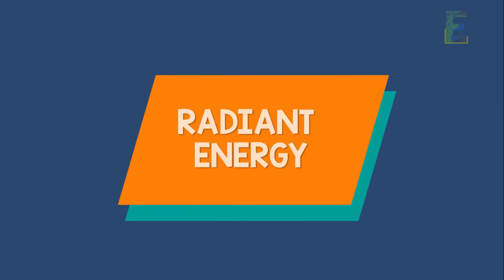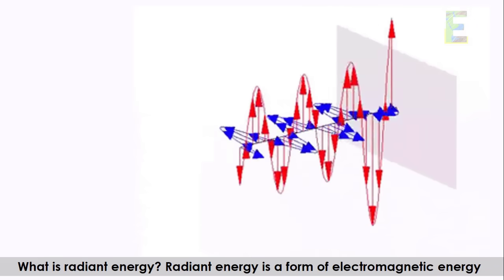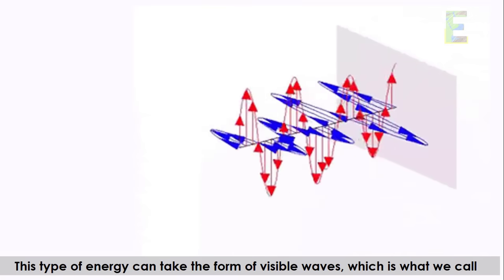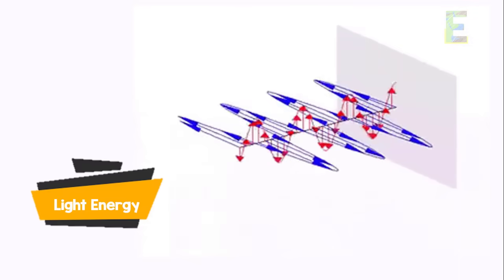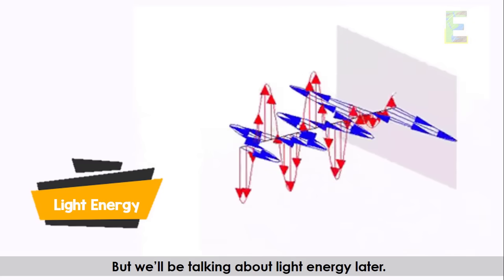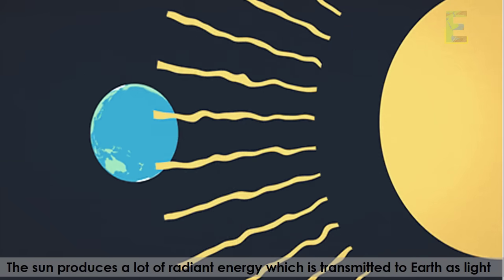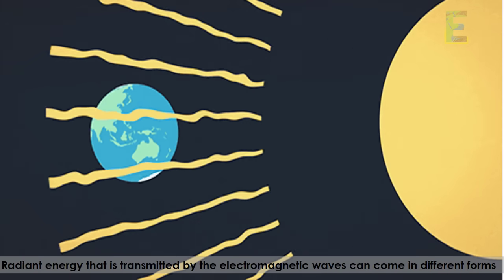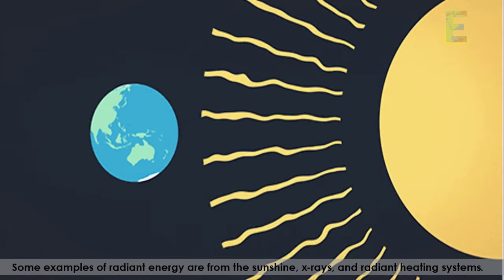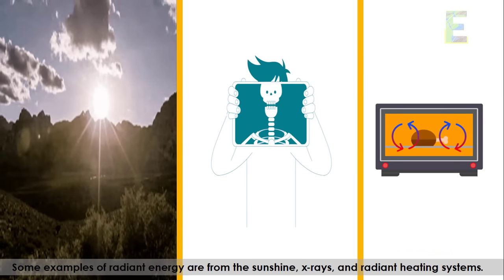The next type of energy is radiant energy. Radiant energy is a form of electromagnetic energy that can take the form of visible waves, which is what we call light energy. The sun produces a lot of radiant energy, which is transmitted to Earth as light. Radiant energy transmitted by electromagnetic waves can come in different forms, such as sunshine, X-rays, and radiant heating systems.